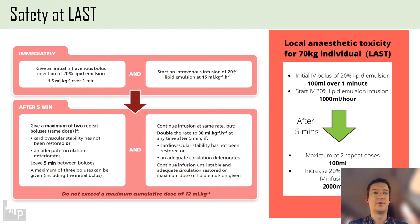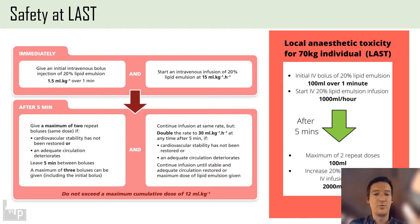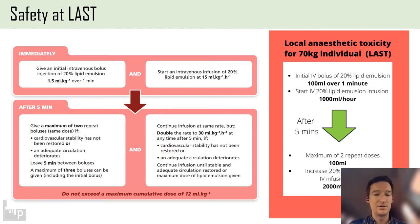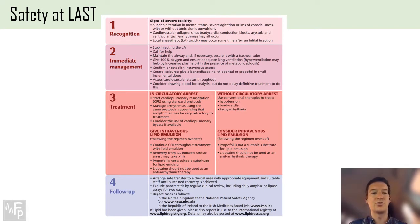Local anaesthetic systemic toxicity: you just need to know the numbers. It's 20% intralipid. The bolus is 1.5 mils per kilogram over one minute, then start an infusion at 15 mils per kilogram per hour. For a 70-kilogram person, that's 100 mils over a minute, then 1,000 mils an hour. You can repeat the bolus doses and double the rate. While doing the intralipid infusion, you're also calling for help, giving 100% oxygen, and using your ABC approach. That's all in the Association guidance on their website.